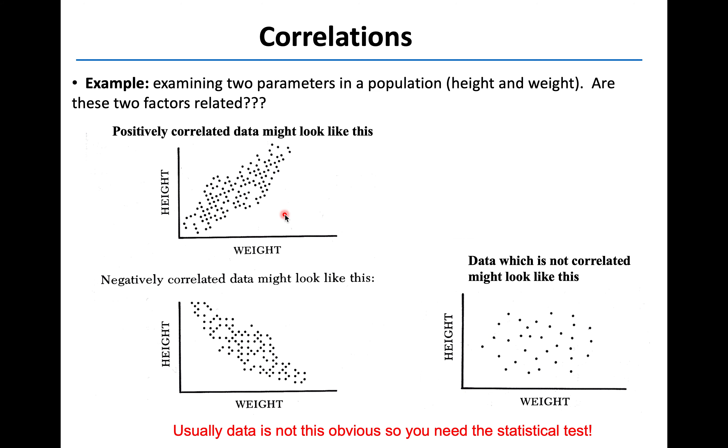Anytime you're looking at a correlation, you've got to be looking at two different parameters, typically in a population. In the example here, we're looking at height and weight. And we want to know, are these two factors related? You could have data that's positively correlated. In this case, weight's increasing with height. Or negatively correlated. In this case, weight decreasing with height. Or you could have data that's not correlated at all. So just scattershot data points, essentially.